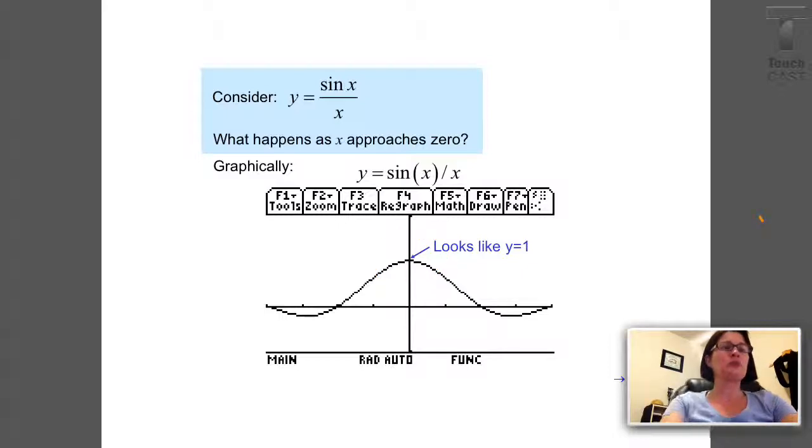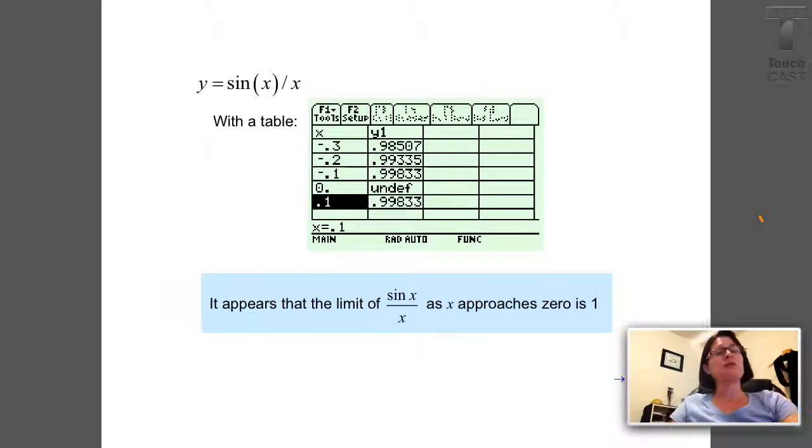Another way we can explore this is with a table of values. So, I can let x be some small negative numbers close to zero, and I can see the numbers as I get closer and closer to zero approach one, and the same pattern is going to continue on the other side of zero. So, we can say, based on our investigation using a graph and a table, that it seems like the limit as x approaches zero of sine x over x is one.